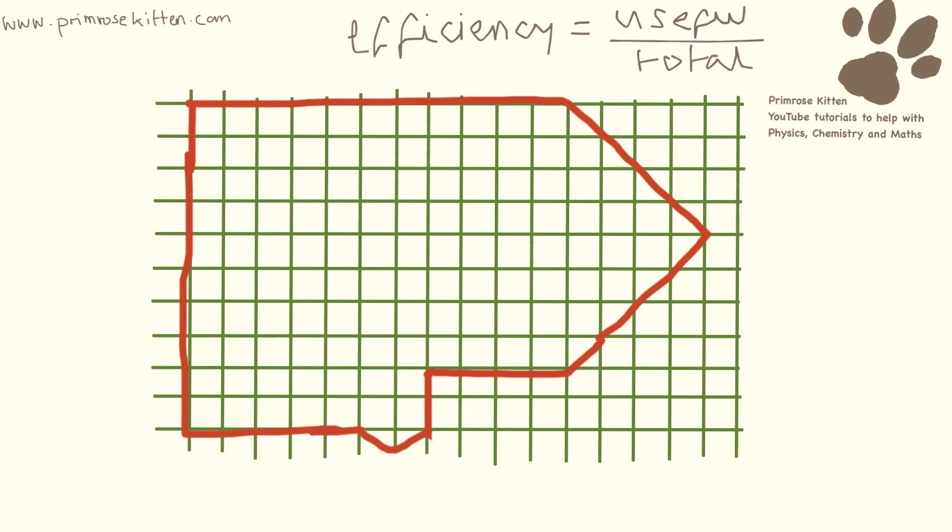Sometimes you might be given a Sankey diagram on a grid and asked to work out the efficiency. You may be given numbers or expected to count them yourself. This involves counting the number of squares. So counting the energy in: 1, 2, 3, 4, 5, 6, 7, 8, 9, 10.